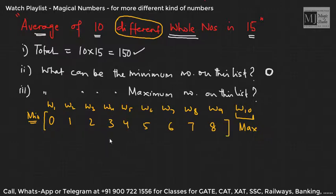All are different. Now what is the sum of these? These are first eight natural numbers. 8 into 9 by 2, that is 36. Total of these nine numbers is 36. That means maximum possible value which this particular position can take is 150 minus 36, that is 114.